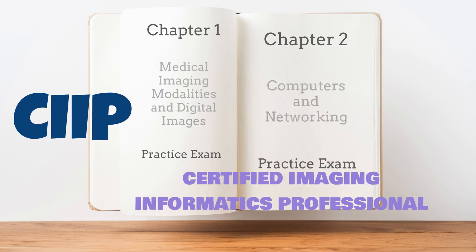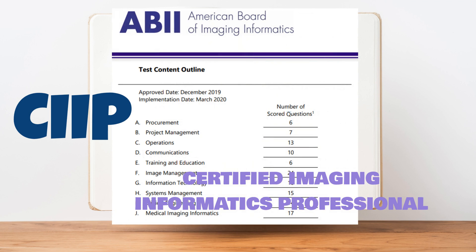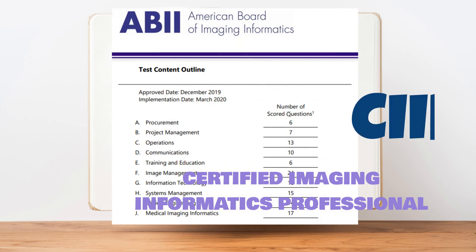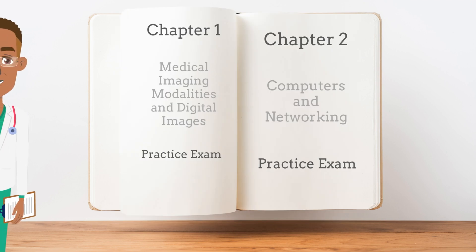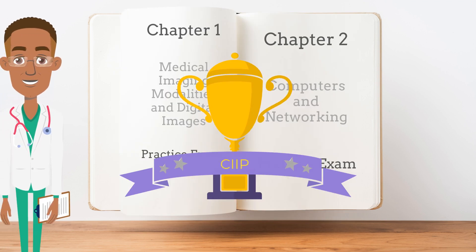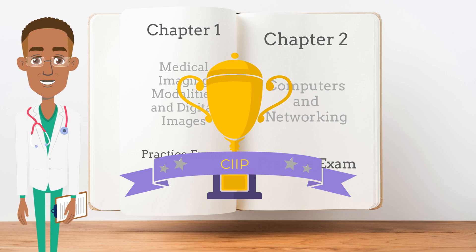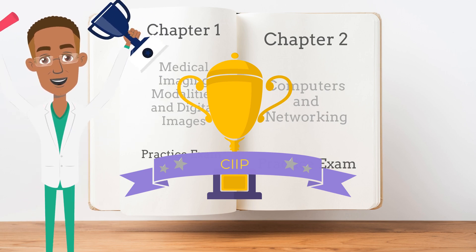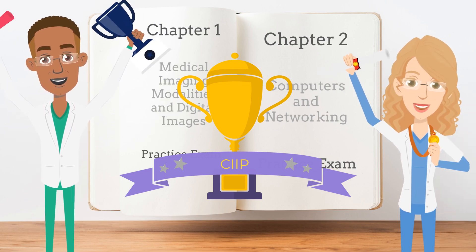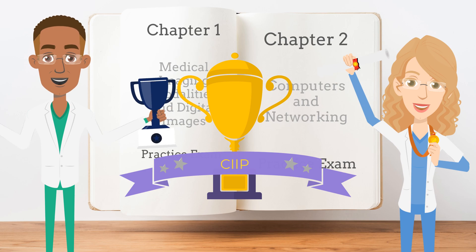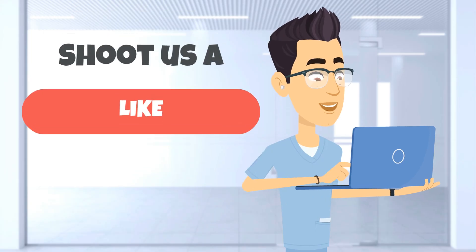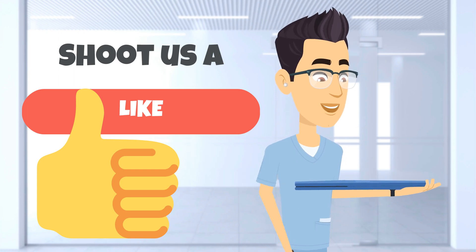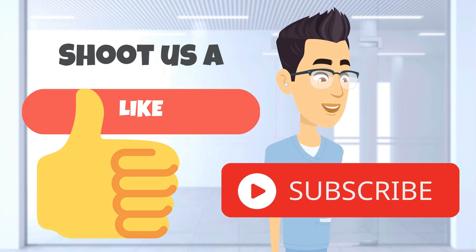The guide will build upon the March 2020 ABII outline by providing additional context to each subtopic. Individual topics from the content outline will be summarized into short and concise descriptions. You can earn 3.5 hours of Category A continuing education credits by successfully completing this course, which has been approved by the American Society of Radiologic Technologists for ARRT continuing education credits.